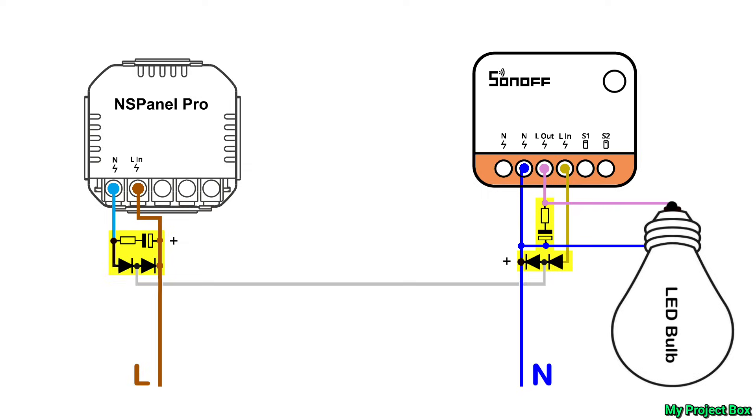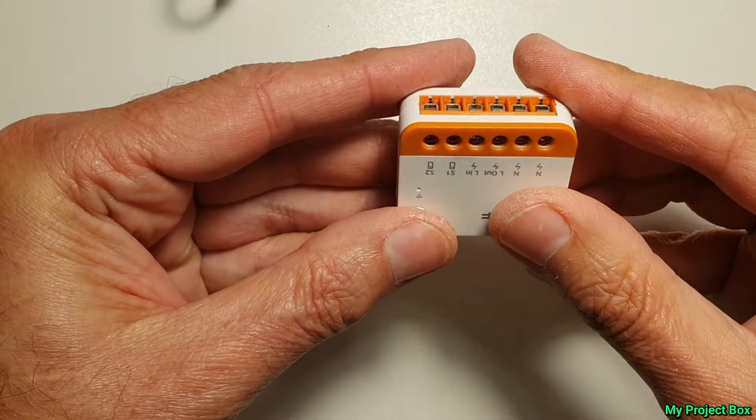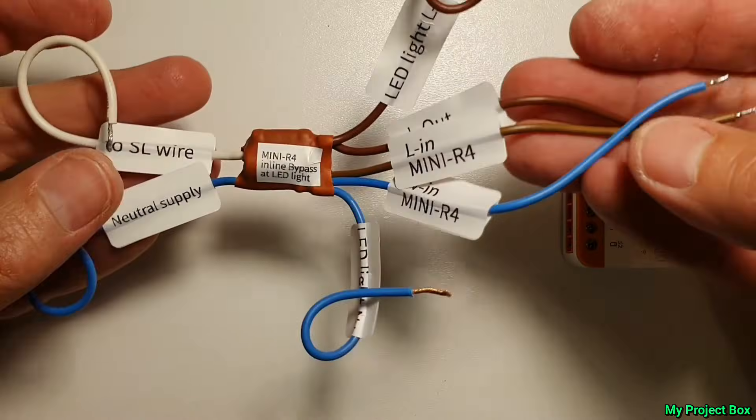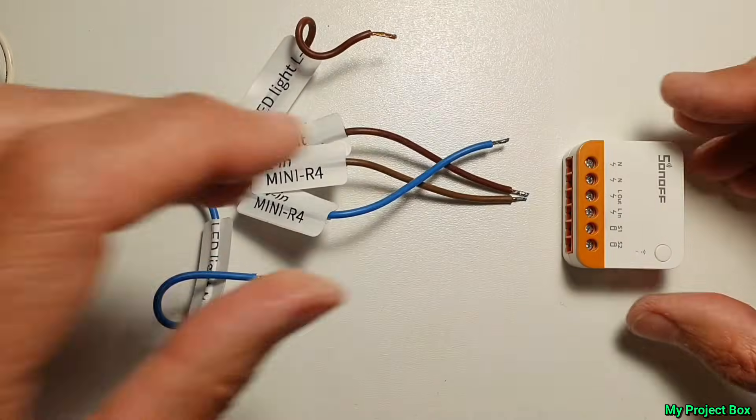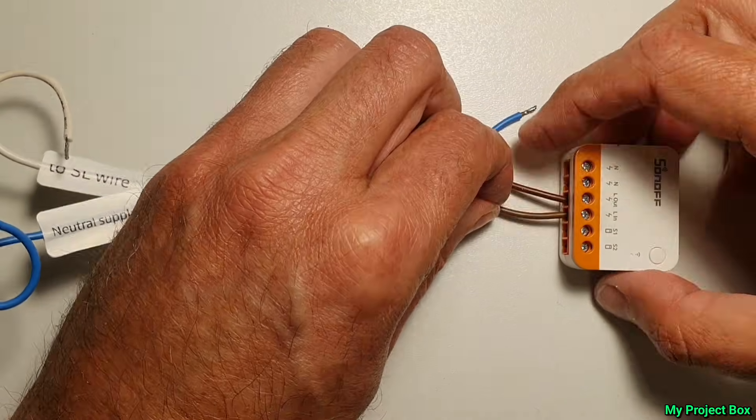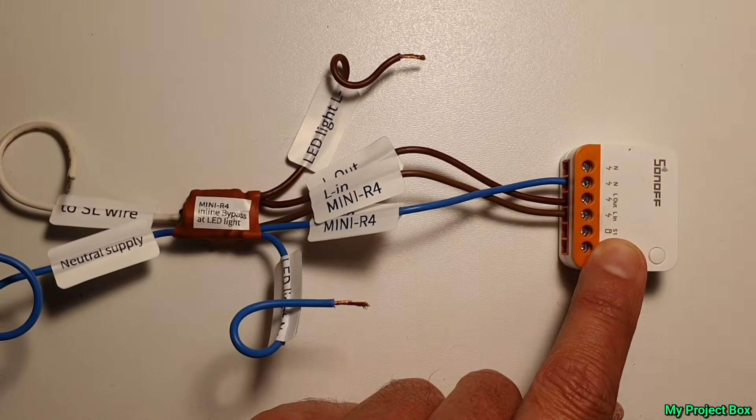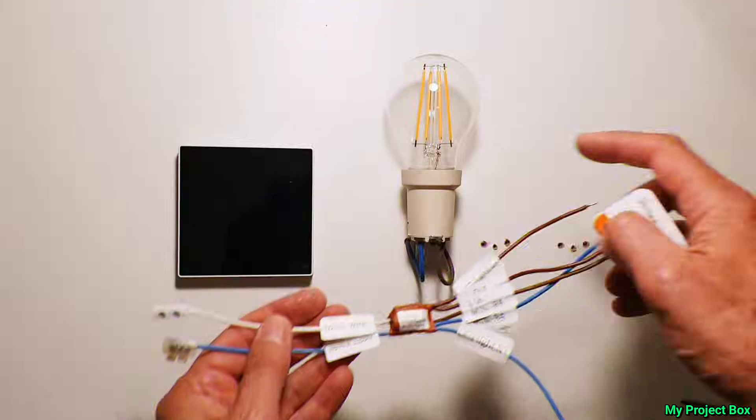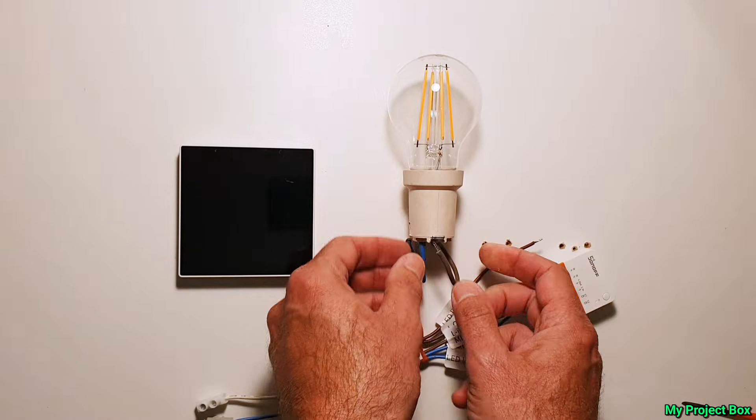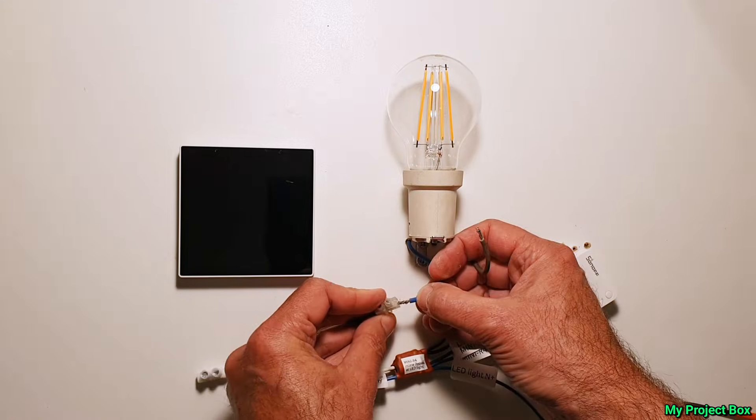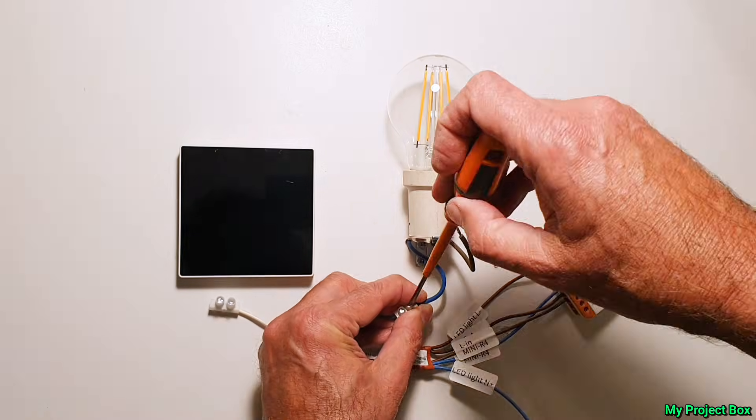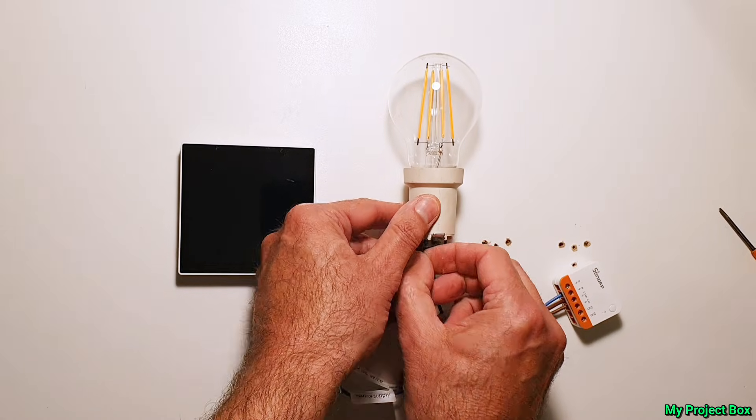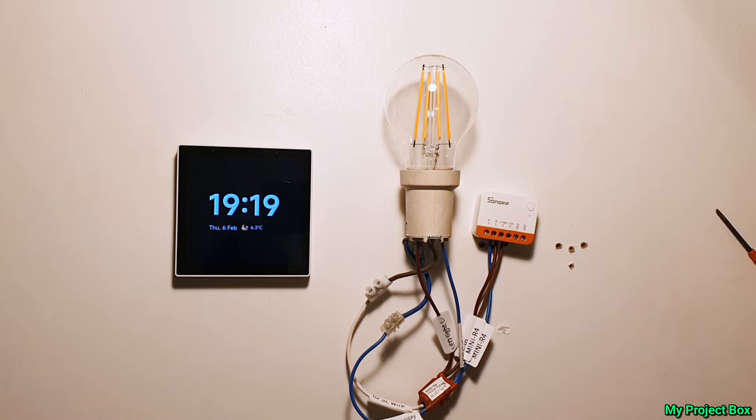So we already have the NS panel pro's module to provide the neutral in place. Now we'll connect our new module to the Sonoff Mini. It has lots of wires but it makes all the convenient connections for us. We simply connect the modules live out and live in and neutral to the Mini R4. The rest of the module simply goes in line with the old switch line and neutral and the existing light fixture. Now we simply disconnect our neutral and switch live from our light fixture and connect it to our neutral input and switch live input on our module. And then the module's output wires connect straight to our light fixture. Let's switch the power back on so we can see if it works.